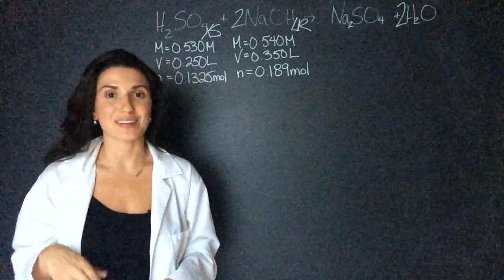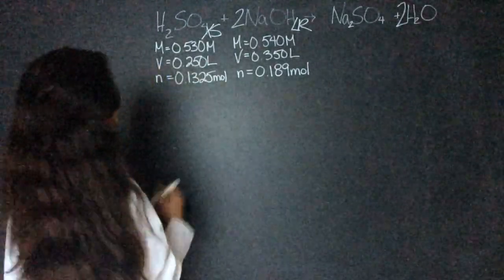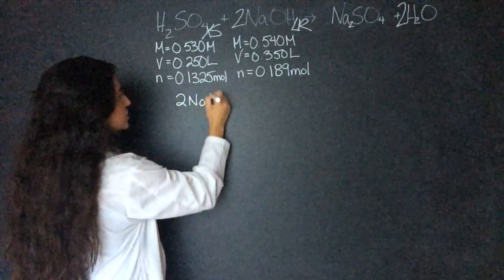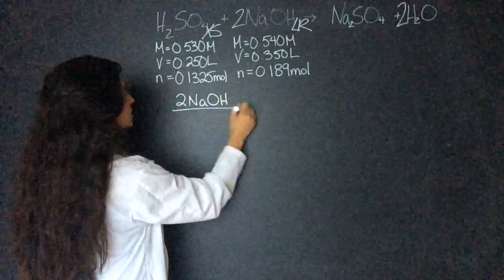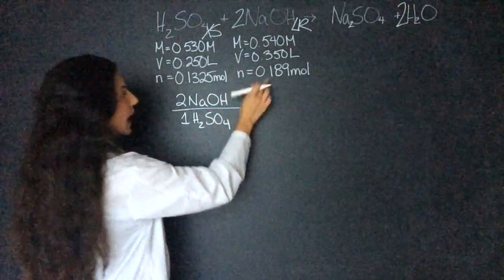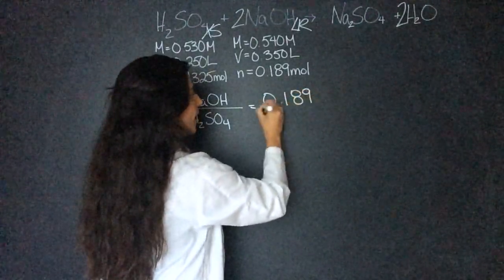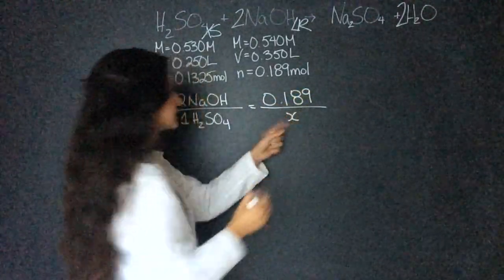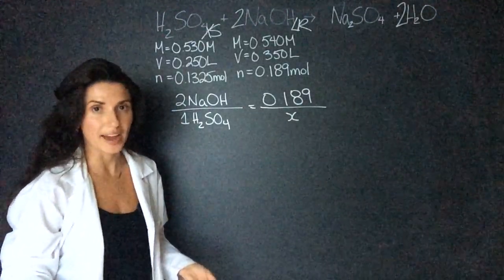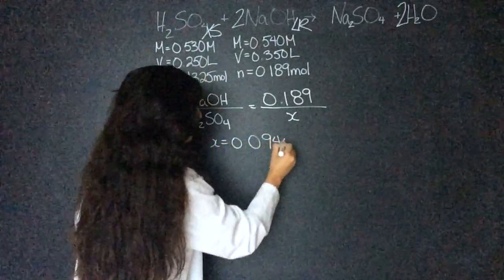So now I have to figure out how much excess sulfuric acid I'm going to have. In order to do that I have to find how many moles of sulfuric acid are going to be used up. So two moles of sodium hydroxide is going to react with one mole of sulfuric acid. Now I'll use these moles because I know that's the limiting 0.189 and X is the moles of sulfuric acid because I want to know how much is actually going to react. I get X to be 0.0945 moles.